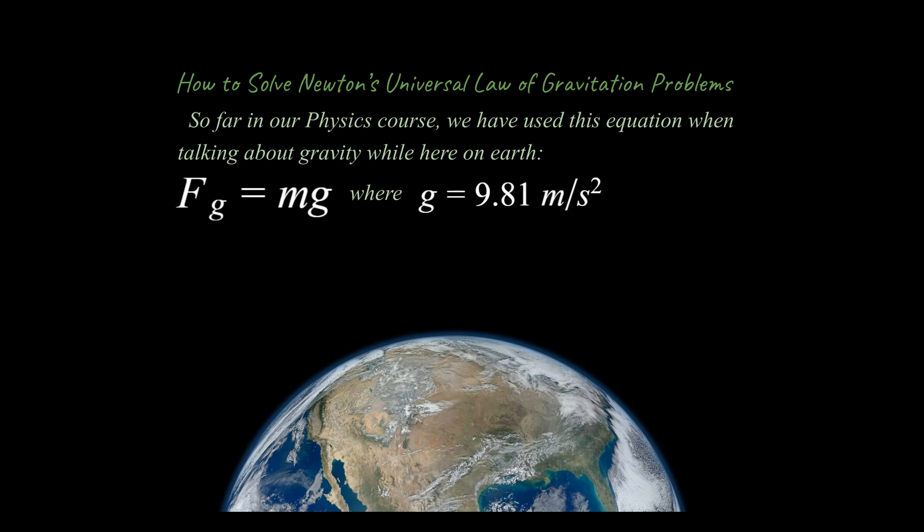Hey, welcome back. We've been talking through our forces unit and we have already talked about the force due to gravity, but I want to update the force due to gravity and talk in a little more detail about it. So far we have talked about the force due to gravity on Earth and we have said on Earth we could just use this simple equation right here where g, the gravitational acceleration, is 9.81 meters per second squared. You literally just have to take the mass of the object you're looking at and multiply it by 9.81 on the surface of the Earth and calculate the force due to gravity.